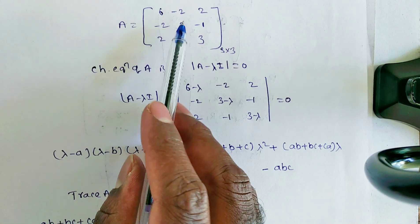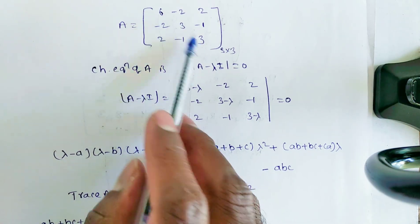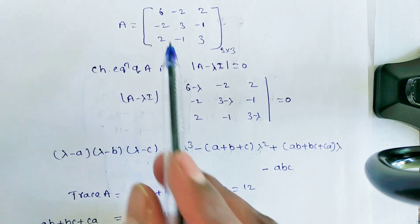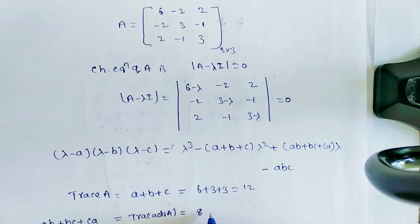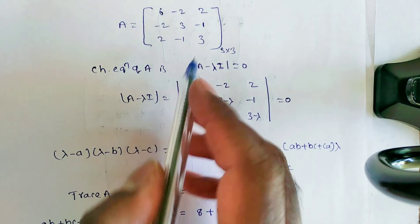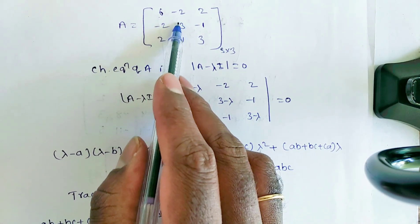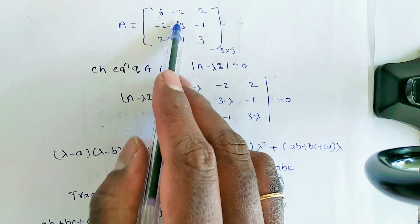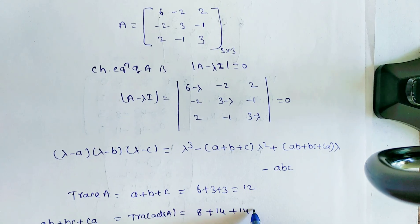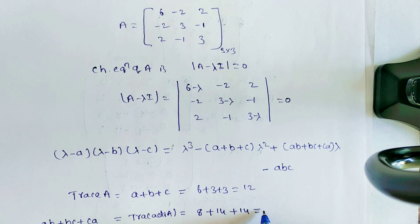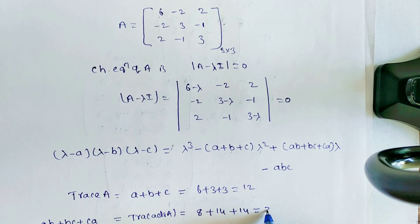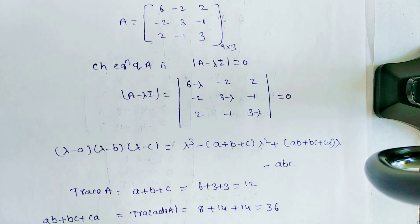For position (3,3): 6×3 - (-2)×(-2) = 18 - 4 = 14. So trace of adjoint A = 8 + 14 + 14 = 36.